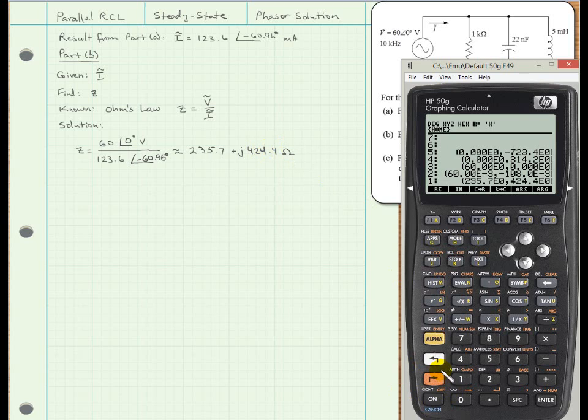Now it might be handy to have that value in polar form, so I will convert that to polar form here and write 485.5 at an angle of 60.96 degrees, and that is in ohms.